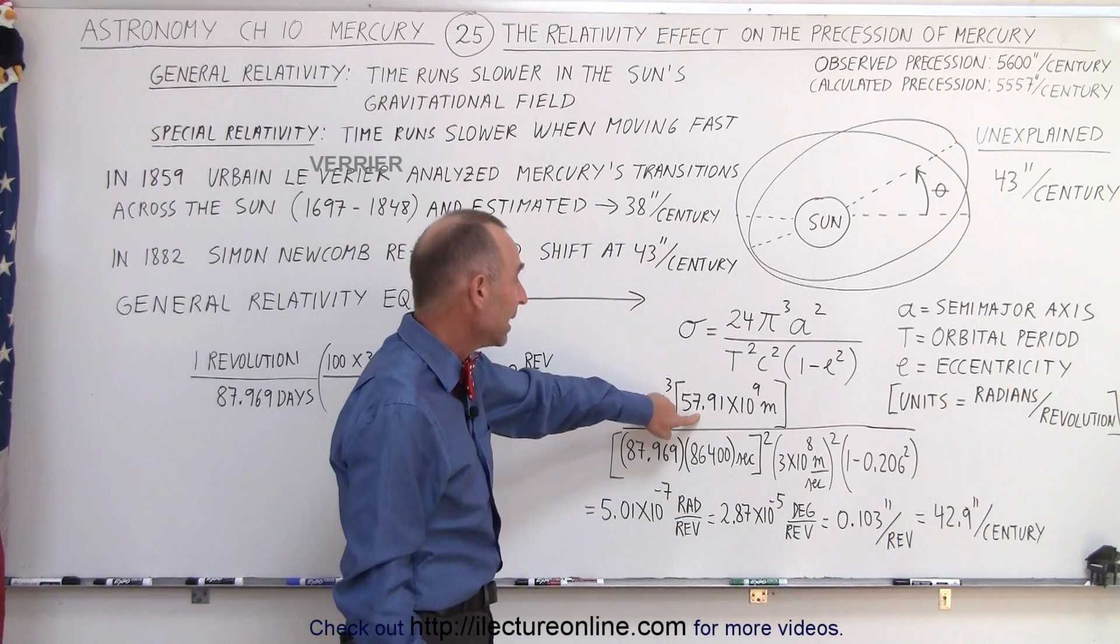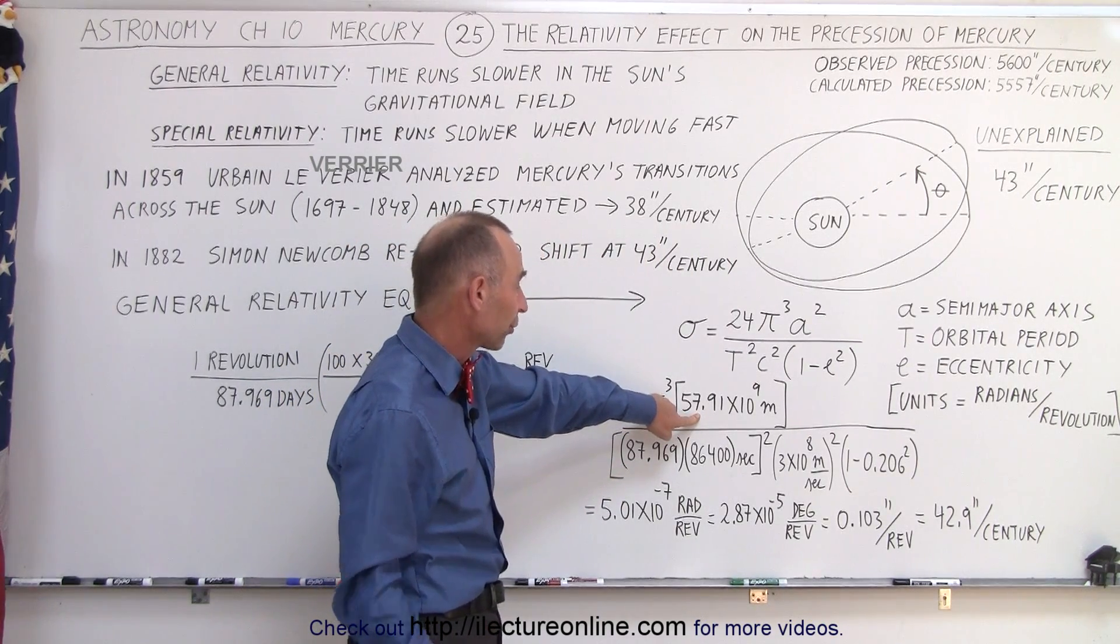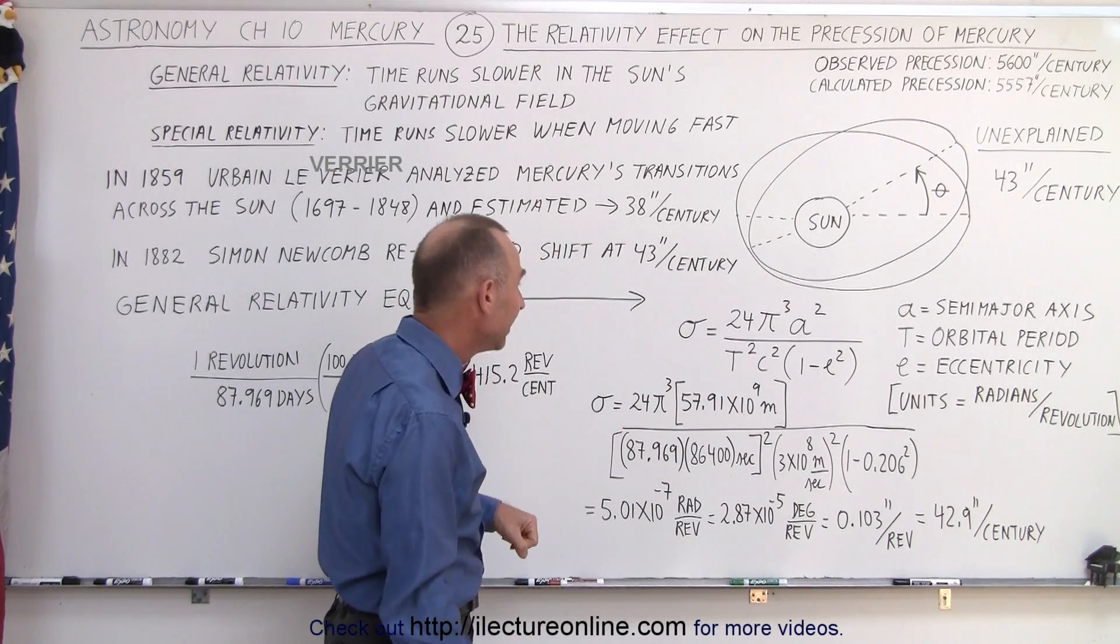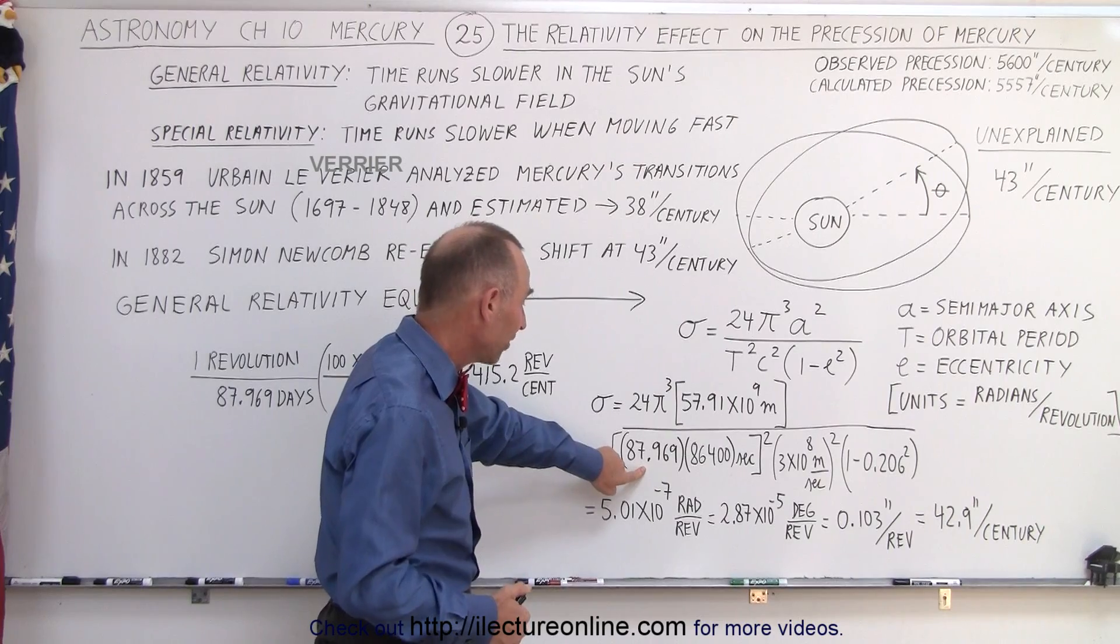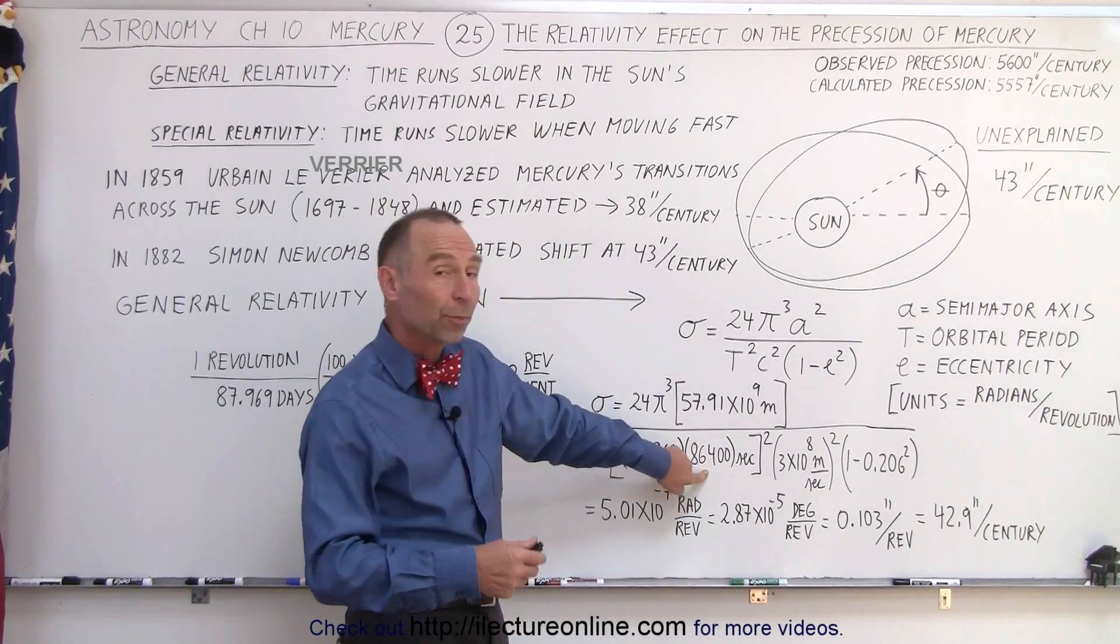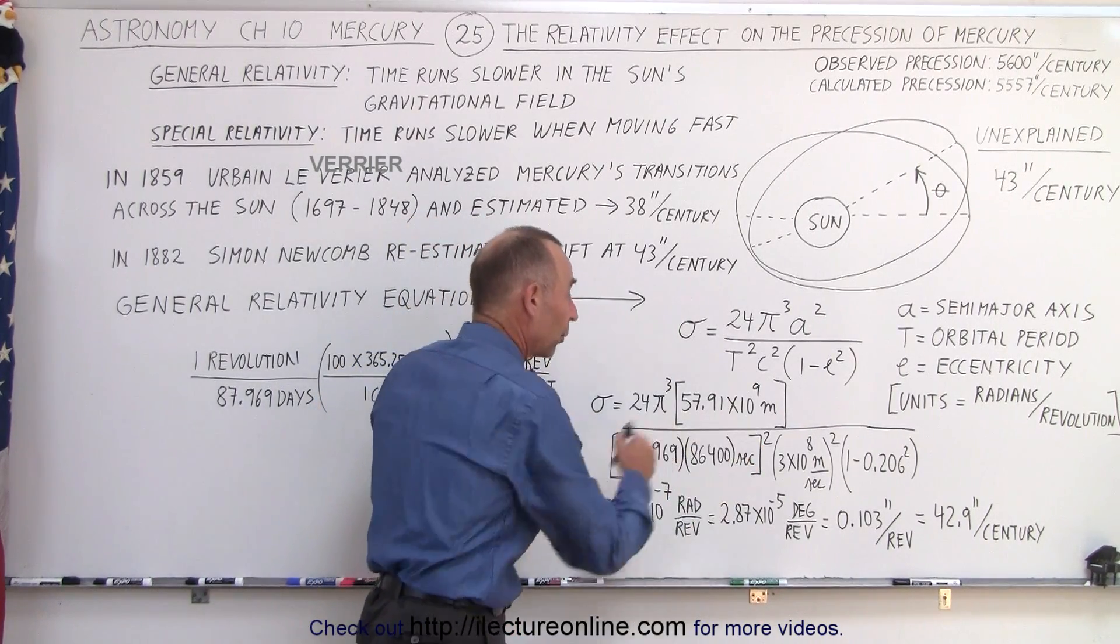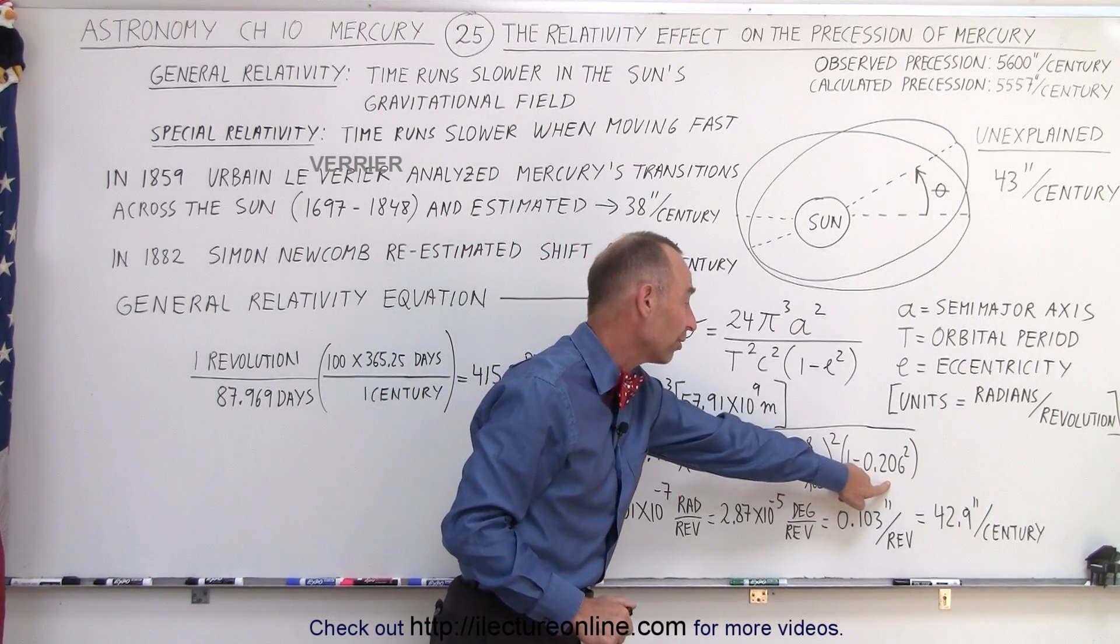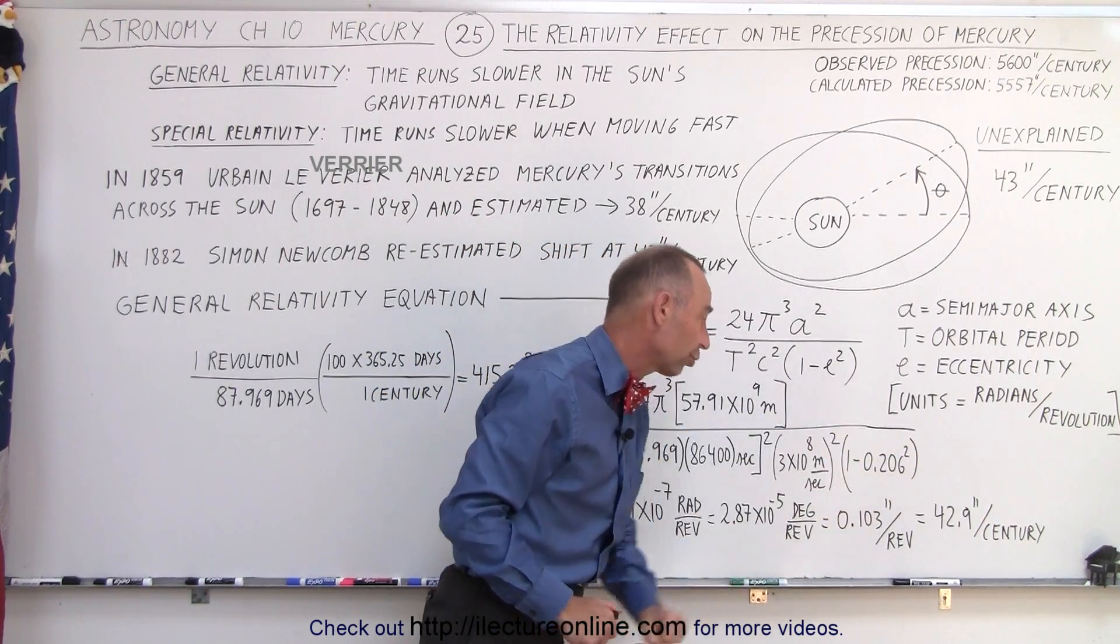First of all the average distance to Mercury from the Sun, about 57.9 million kilometers, then the orbital period almost 88 days times the number of seconds in a day, we have to take that quantity and square it, the speed of light squared, and one minus the eccentricity of the orbit of Mercury squared.